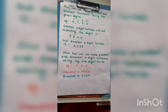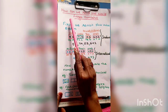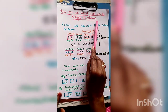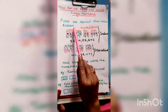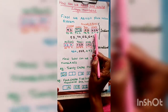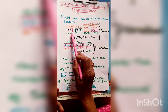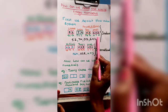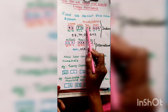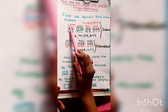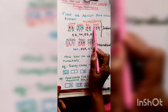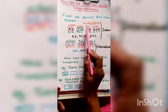Now I will explain how we can read and write large numbers using place values. First, we revisit the place value system. I will explain the Indian place value system. In the Indian place value system, there are periods and places. The ones period has 3 places, and all other periods have 2 places each.